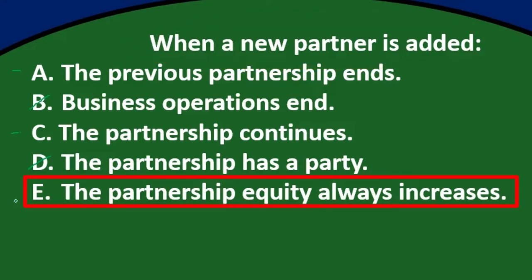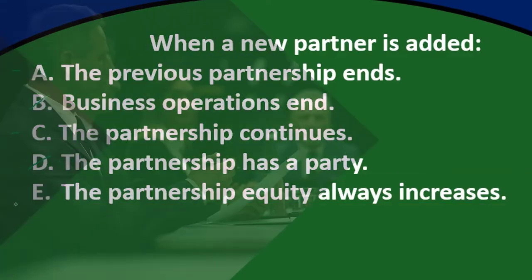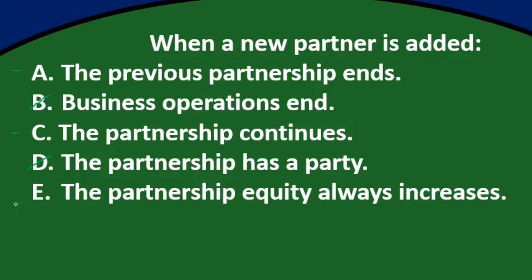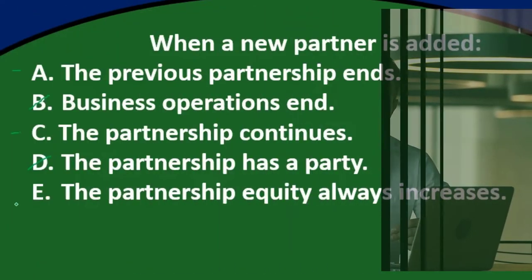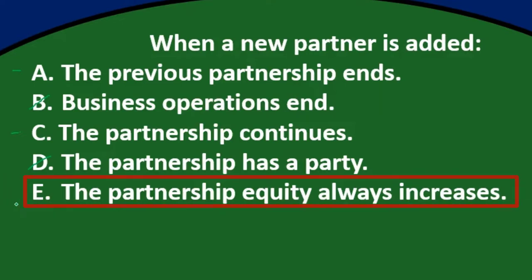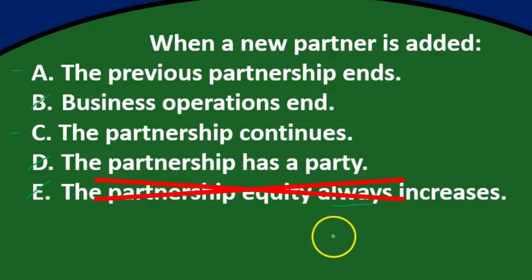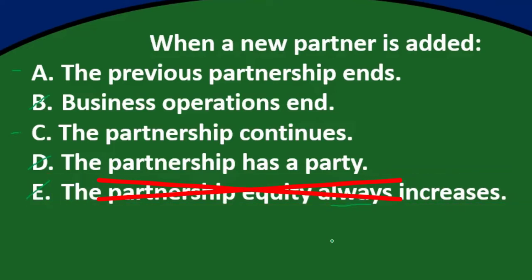A partner could join by buying a partnership interest from an existing partner rather than contributing new money, so total equity might not increase. The key term in E is 'always' — whenever you see an answer with 'always,' that usually cancels it out, because all you need is one case where it doesn't happen. Watch out for that word; it eliminates a lot of answers.